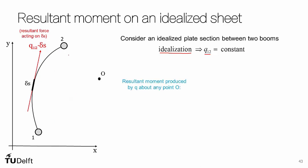Now to look at the moments we have to pick a point, so I'll pick an arbitrary point O that we will sum the moments about. This could be any point. The moment due to the resultant force acting on ds will be the resultant force Q12 delta s times the moment arm, which is the perpendicular distance between that resultant force and point O, denoted as rho here.